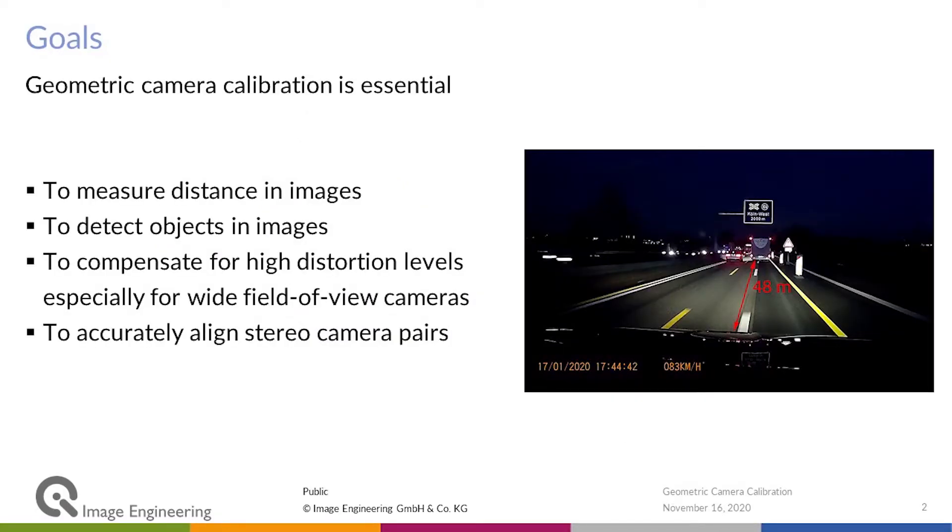Geometric camera calibration is essential whenever you want to measure distances in images or detect objects. You need to correct your image geometrically.